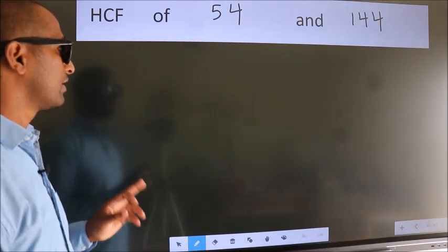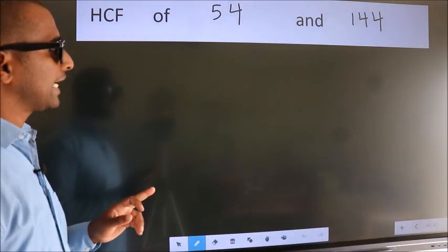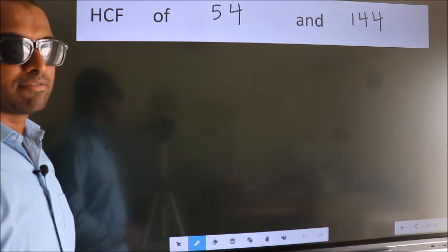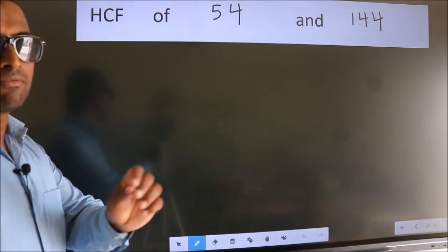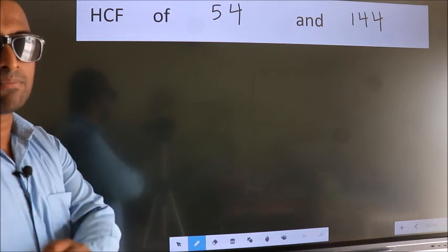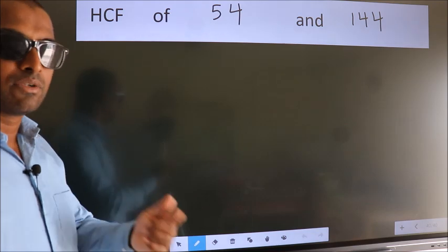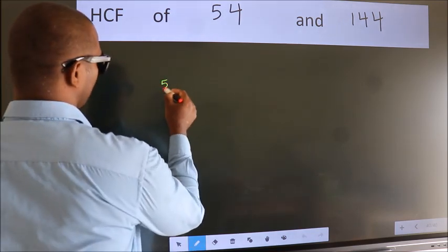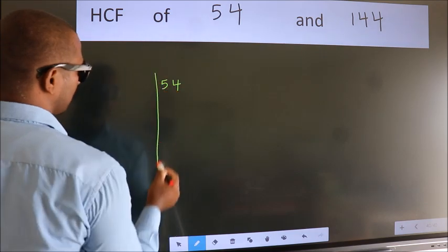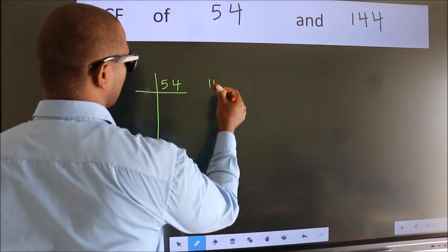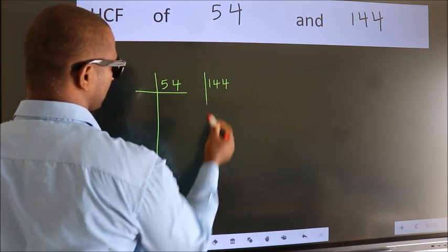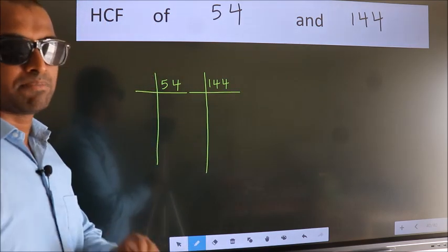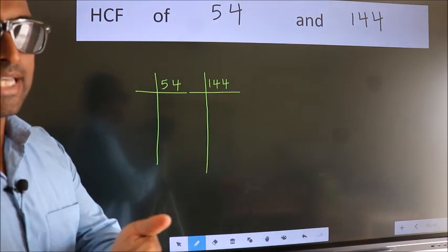HCF of 54 and 144. To find the HCF, we should do the prime factorization of each number separately. We write 54 here and 144 here. This is your step 1.